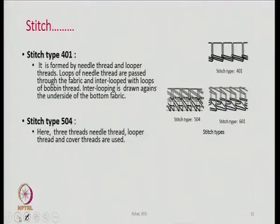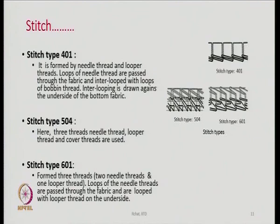Stitch type 401 is formed by needle thread and looper threads — loops of needle threads are passed through the fabric and interloop with loops of the bobbin thread. The interlooping is drawn against the underside of the bottom fabric, so the interlooping part is very close to the bottom part of the fabric.